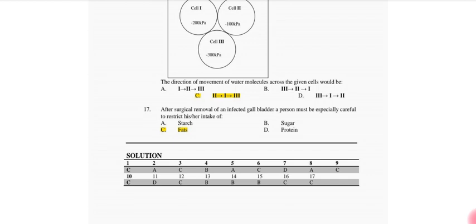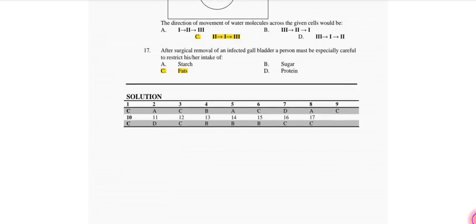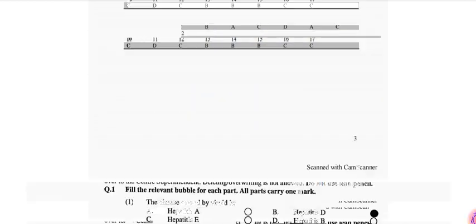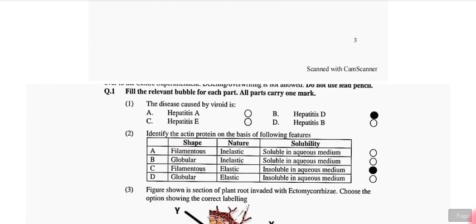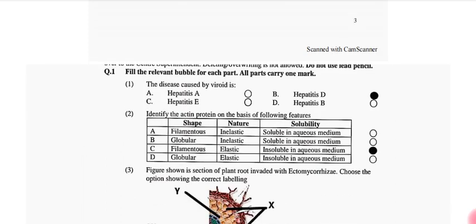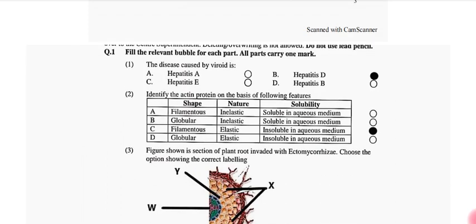After surgical removal of an infected gallbladder, a person must be especially careful to restrict the intake of fats because they cannot metabolize it. Fill in the blanks: the disease caused by viroid is Hepatitis D. Identify the actin protein on the basis of following features: shape, nature, and solubility. That is filamentous, elastic, insoluble in aqueous medium.